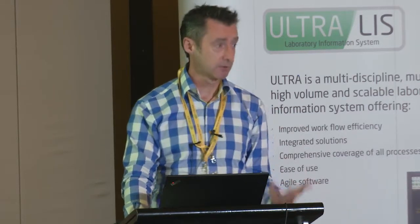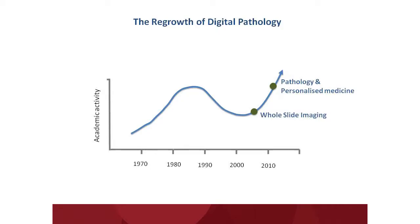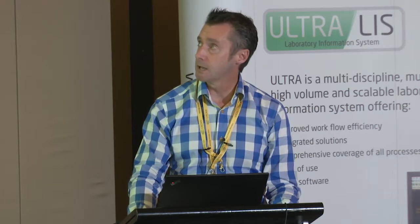Since the early 2000s, digital pathology is really beginning to grow again, primarily due to two things. One is the advent of whole slide imaging — being able to take glass slides and scan them in their entirety, which is now being implemented in routine primary diagnostics. The other key area is the recognition that pathologists have an absolutely central role in the delivery of personalized or precision medicine: identifying biomarkers that allow us to stratify patients and identify which patients will benefit from new therapies.